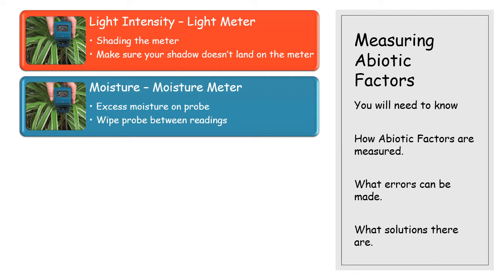Moisture is measured by a moisture meter. One of the common problems is getting excess moisture on the probe. For example, if you sample beside the pond and then sample in the wood without cleaning the probe between readings, you'll potentially get the wrong reading in the wood. So you need to wipe the probe between readings.